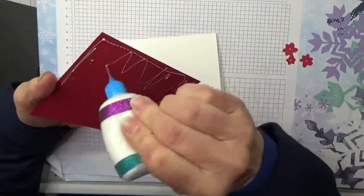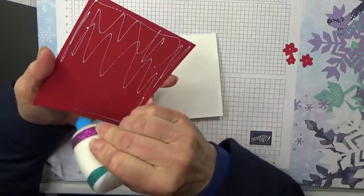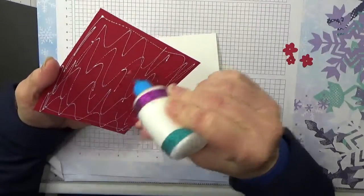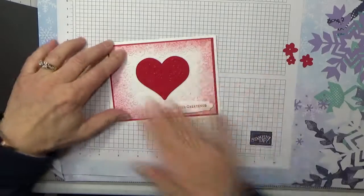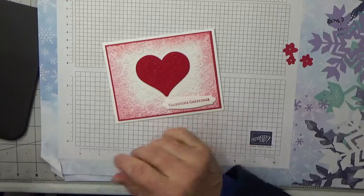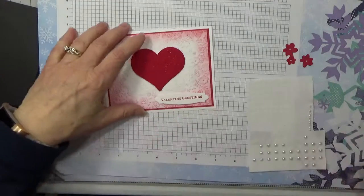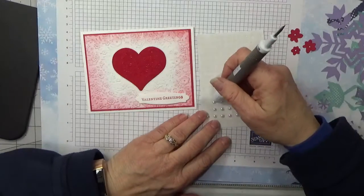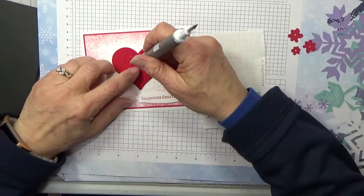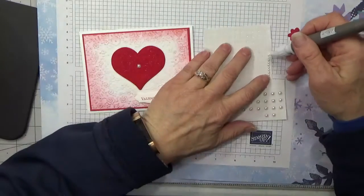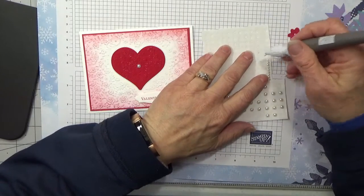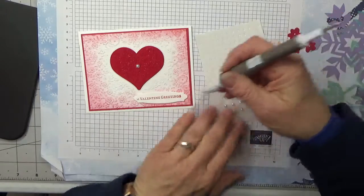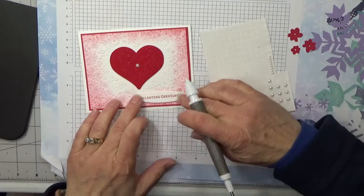And then this I'm going to put down flat because I've already got dimension with the heart and the sentiment. You could dimension this part too. Okay, and the last thing I'm going to do... well, not the last thing. I'm going to put a pearl there and a pearl, a smaller pearl, on the greeting.